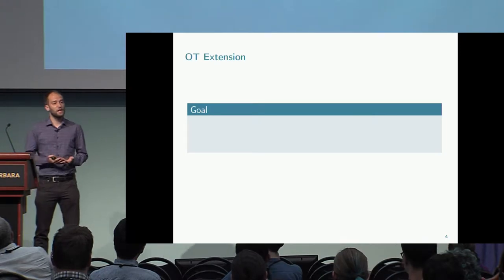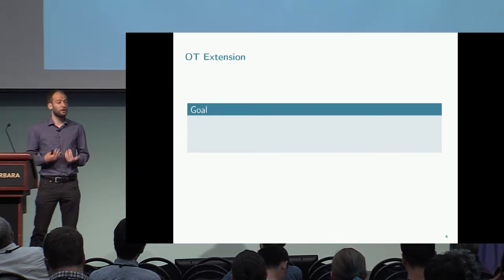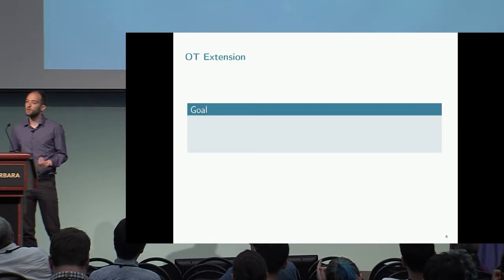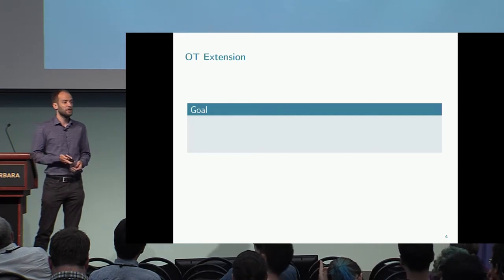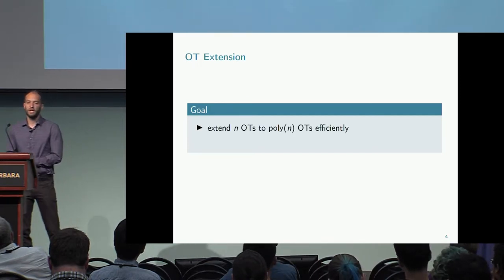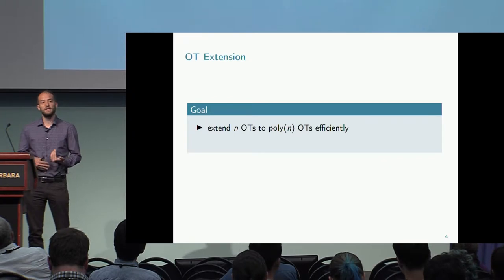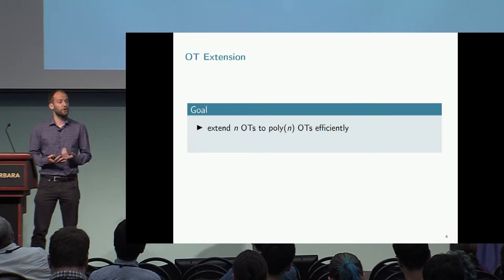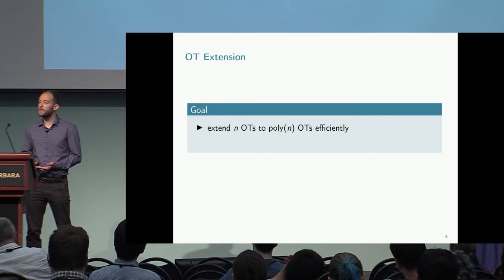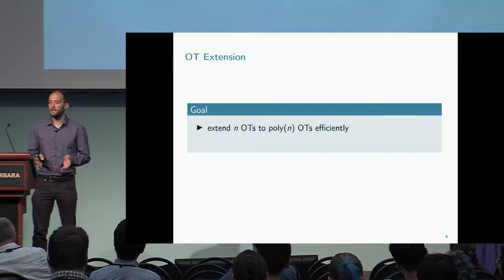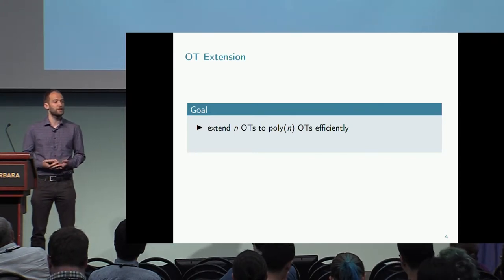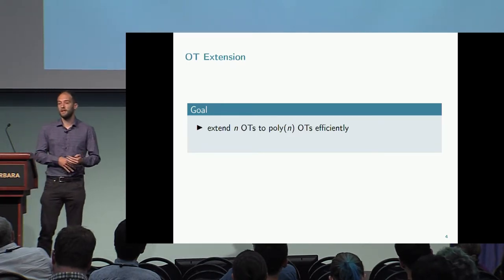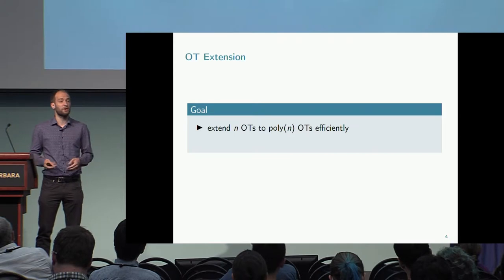There is a nice way to bypass that issue and increase efficiency by a lot: using OT extension. The goal of OT extension is to start with a critical mass of oblivious transfers and extend them very efficiently to a much larger amount. For example, with 80 bits of security, you start with around 80 OTs using public key operations, then extend to thousands of OTs.